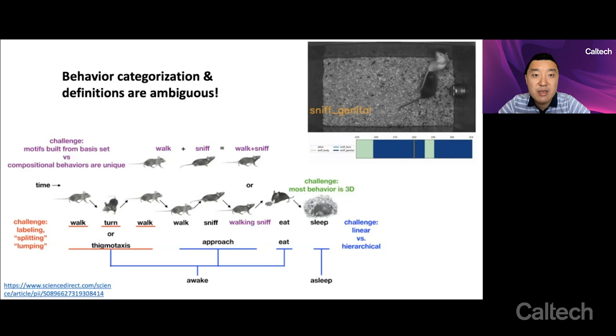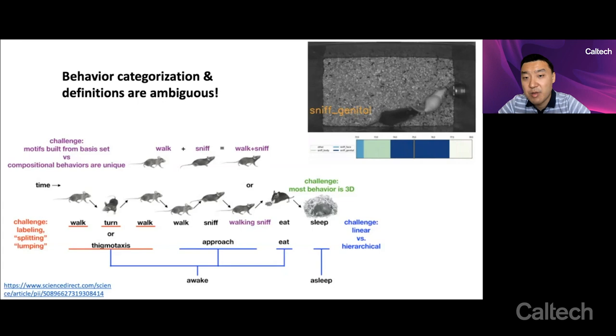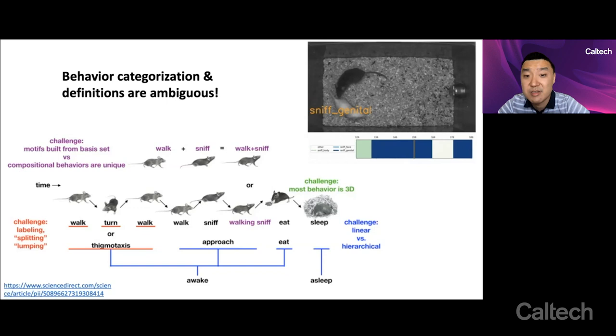And when a domain expert studies behavioral neuroscience in their research project, they have to, for example, provide labels of the videos. And their labels may or may not even agree with each other. And so it can be hard to compare results across studies because these definitions and categorizations and labels are not completely consistent.